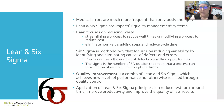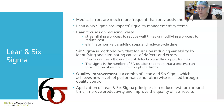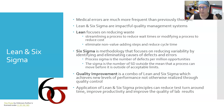Six Sigma is a methodology that focuses on reducing variability by identifying and eliminating causes of defects and errors. The process sigma is the number of defects per million opportunities — in the lab, it would be per million tests. The sigma is the number of standard deviations outside of the mean that a process can move before it is outside of acceptable limits, or basically how far off the ranch it can go before it's really a problem.